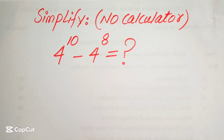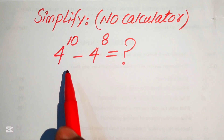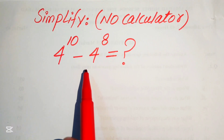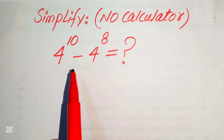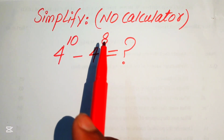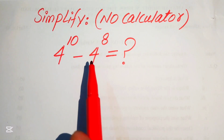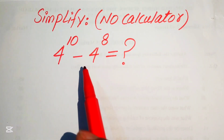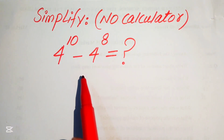Hello everyone. How to simplify this nice algebraic expression: 4 to the power of 10 minus 4 to the power of 8. We need to write this term in its lowest form without using the calculator — the calculator is not allowed in this problem. We can do all of the working in your mind or on paper.